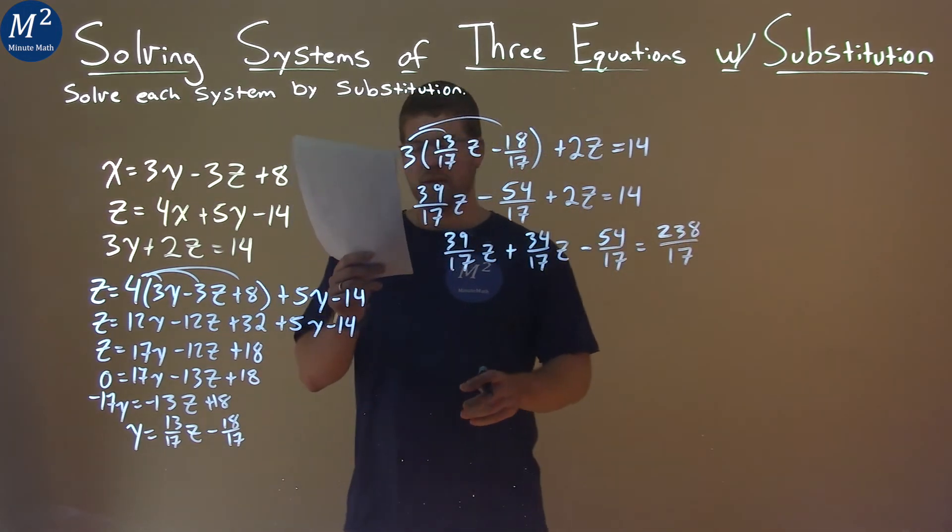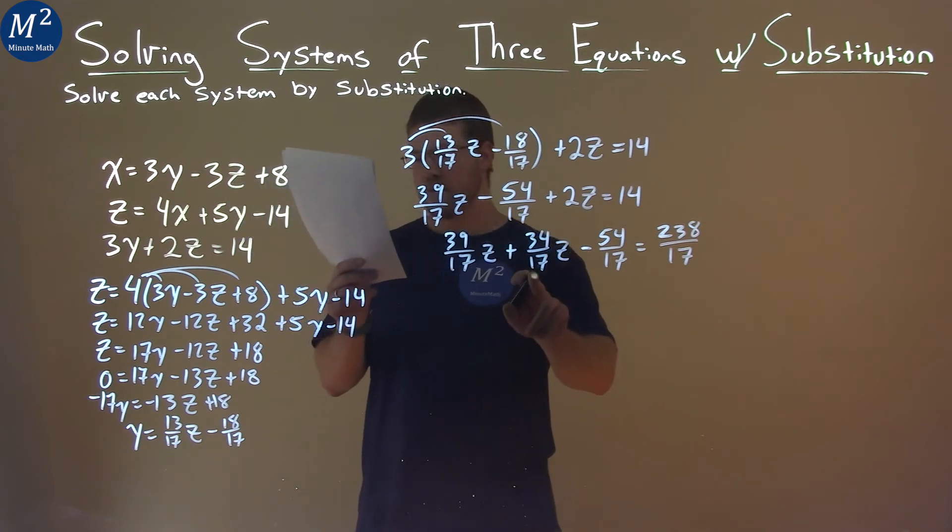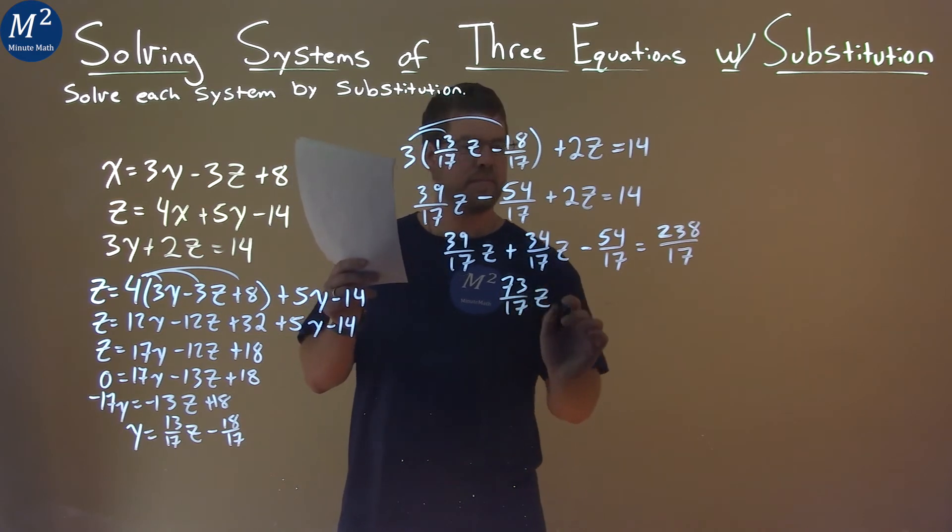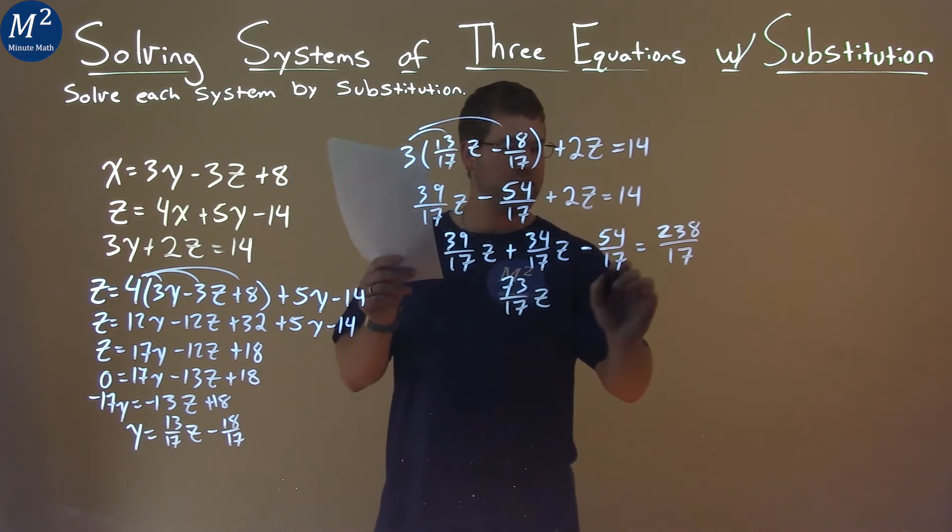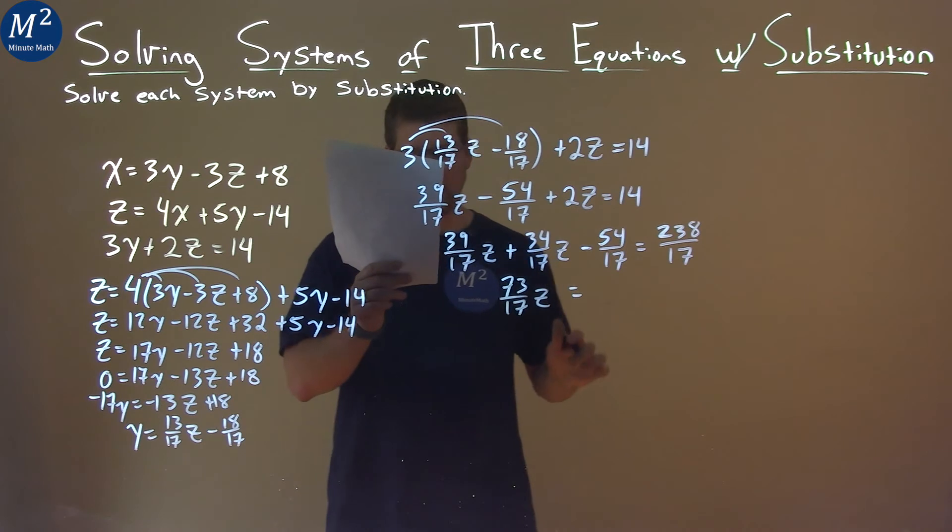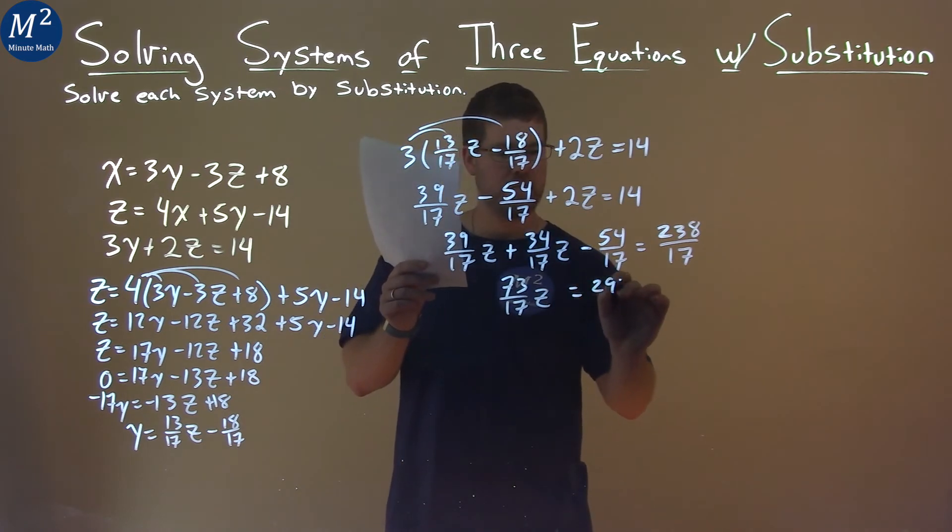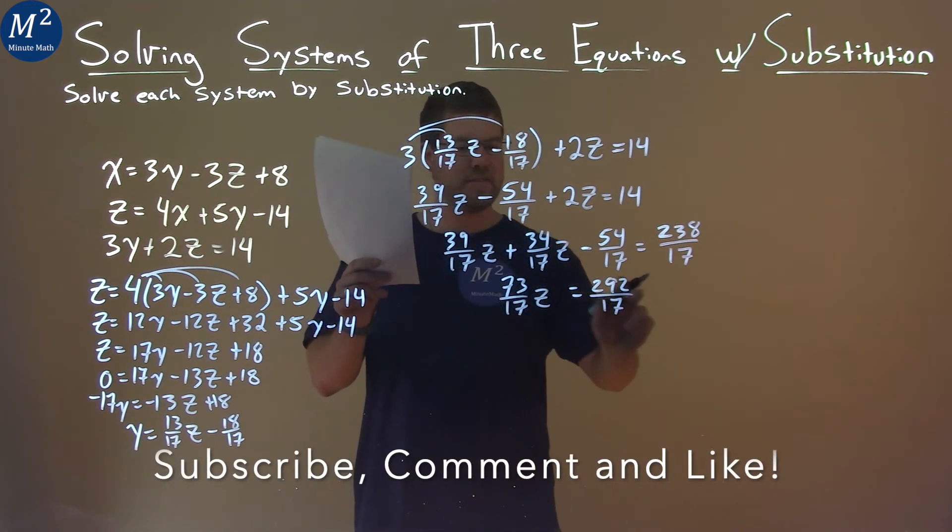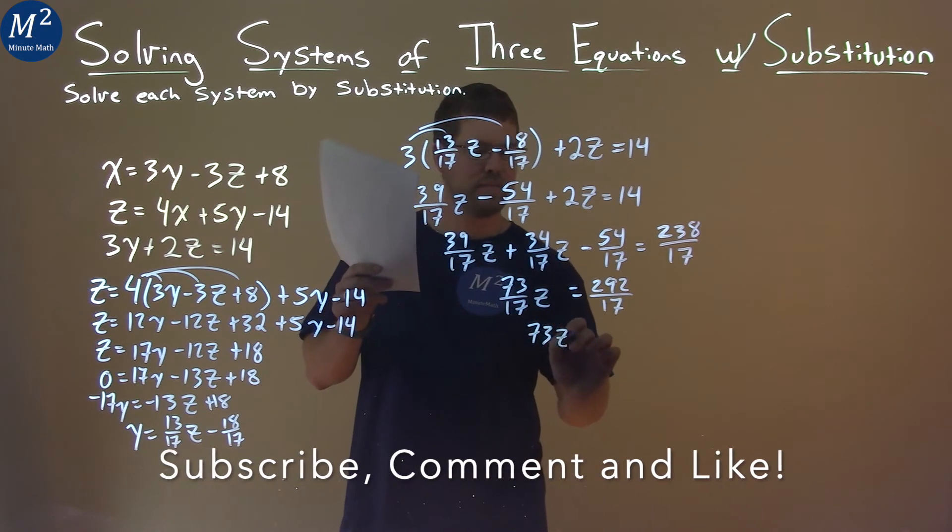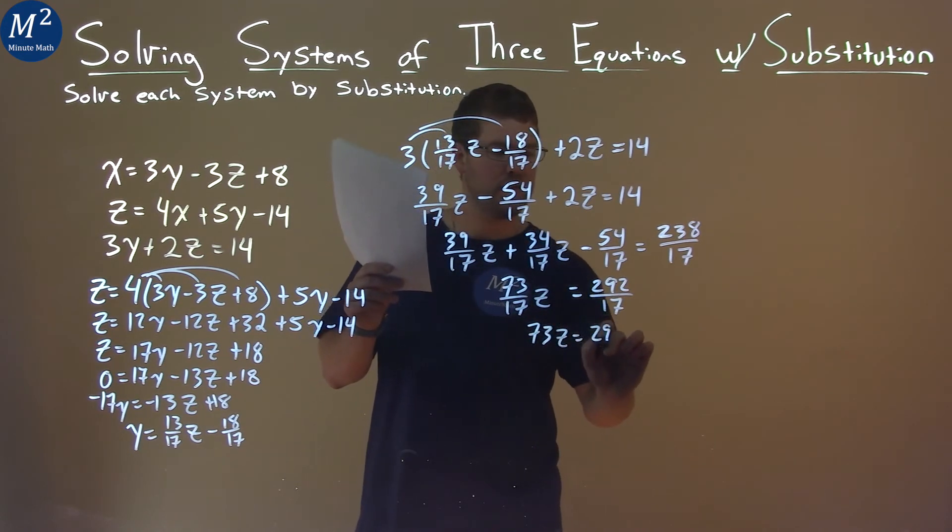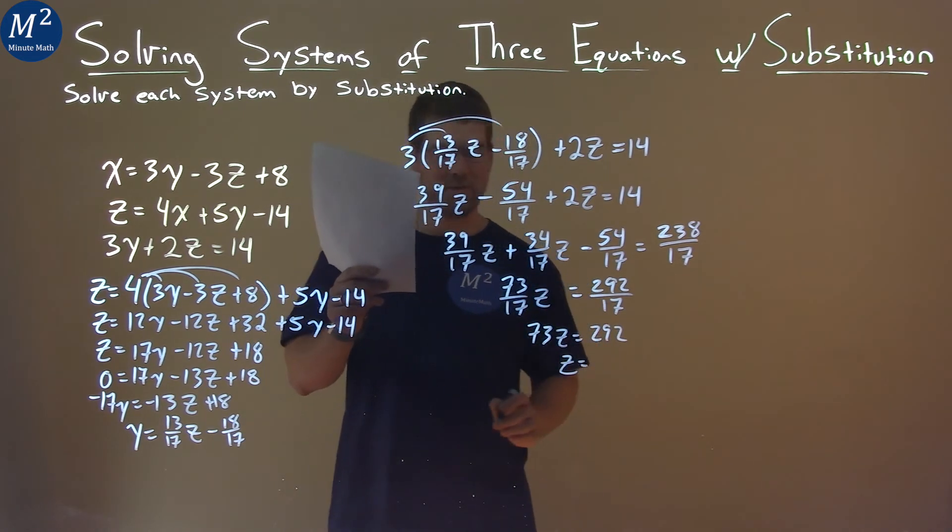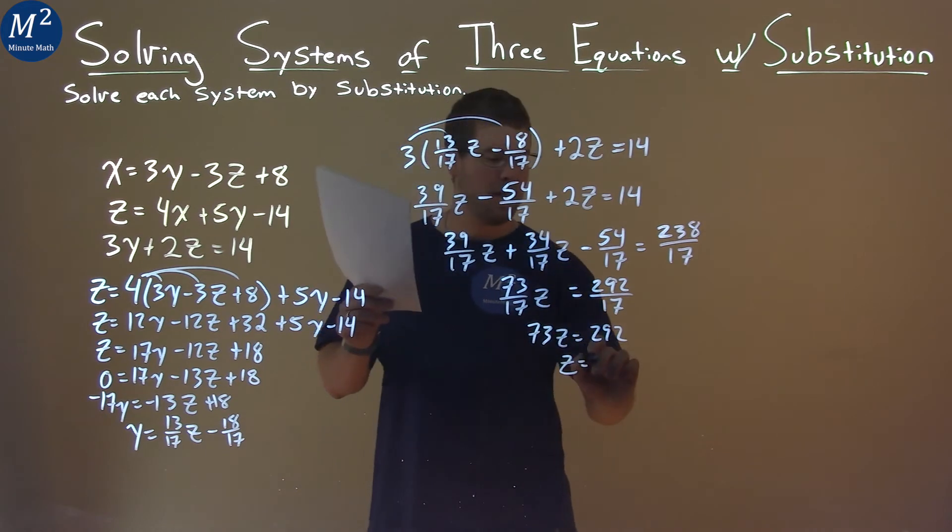So, now from there, let's combine our like terms. 39 over 17z plus 34 over 17z is 73 over 17z. And then we add a 54 over 17 to both sides, and we have a 292 over 17 here. Alright, now we can multiply both sides by 17. They cancel out, so we have 73z equals 292. Then divide both sides by 73, and z is now by itself, and 292 divided by 73 is good old 4.